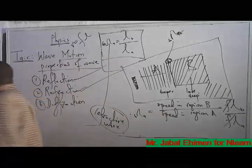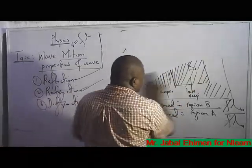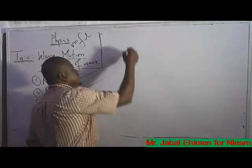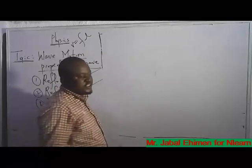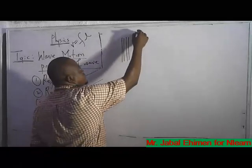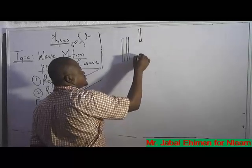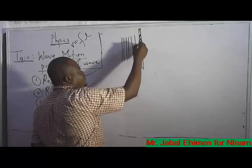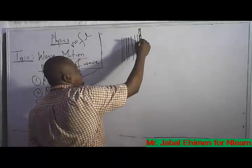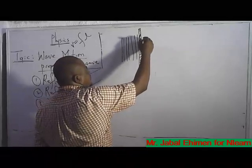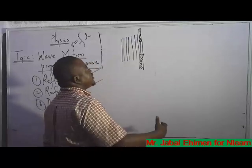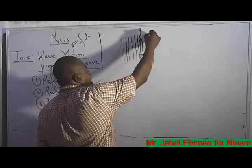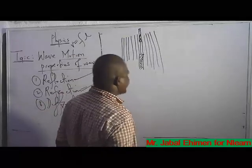The next property is diffraction — something totally different. When a wave is made to pass through a certain thin hole or gap, and there is an obstacle on either side, the wave must pass through that hole. When it passes through and comes out, it is observed that it spreads out. That spreading out is what we call diffraction.